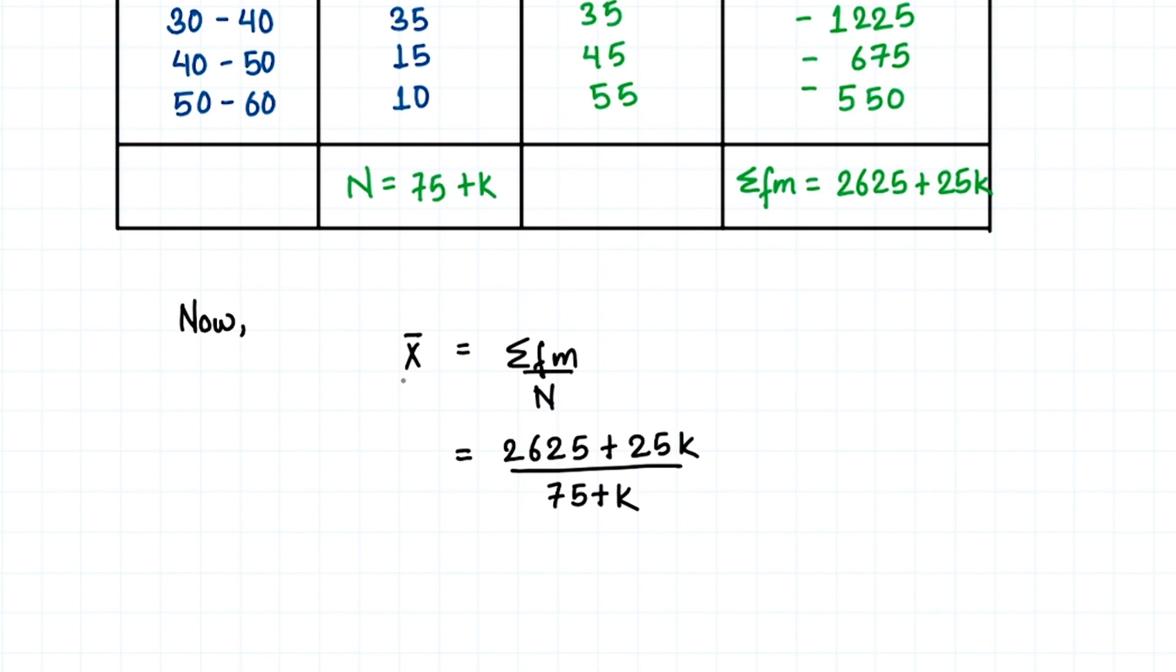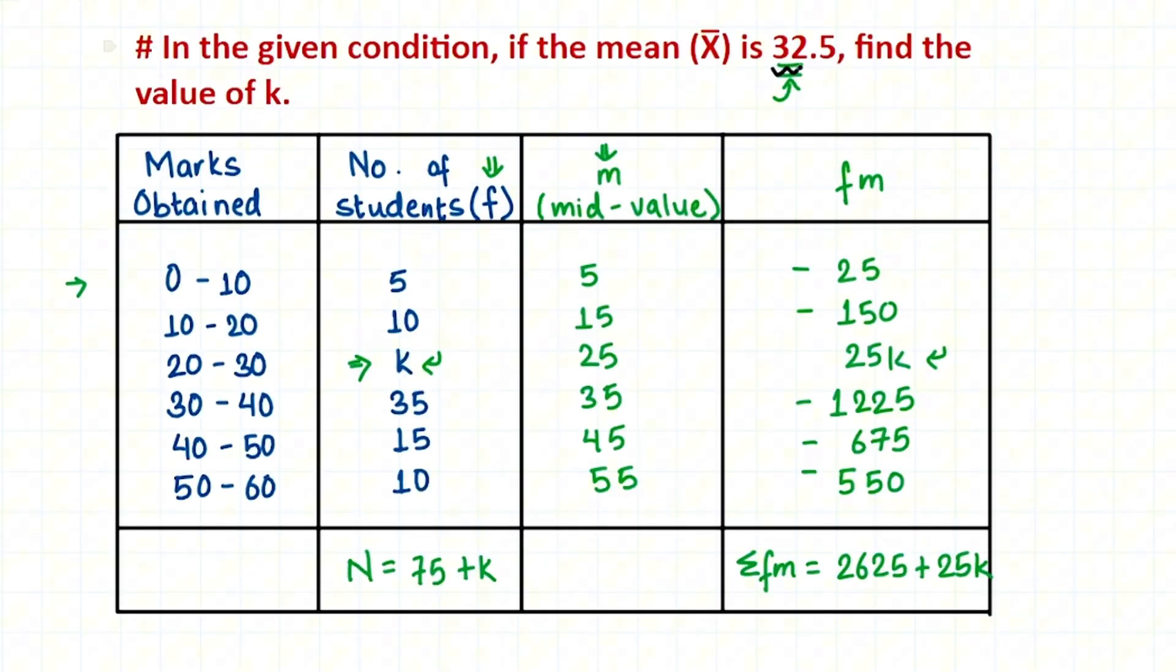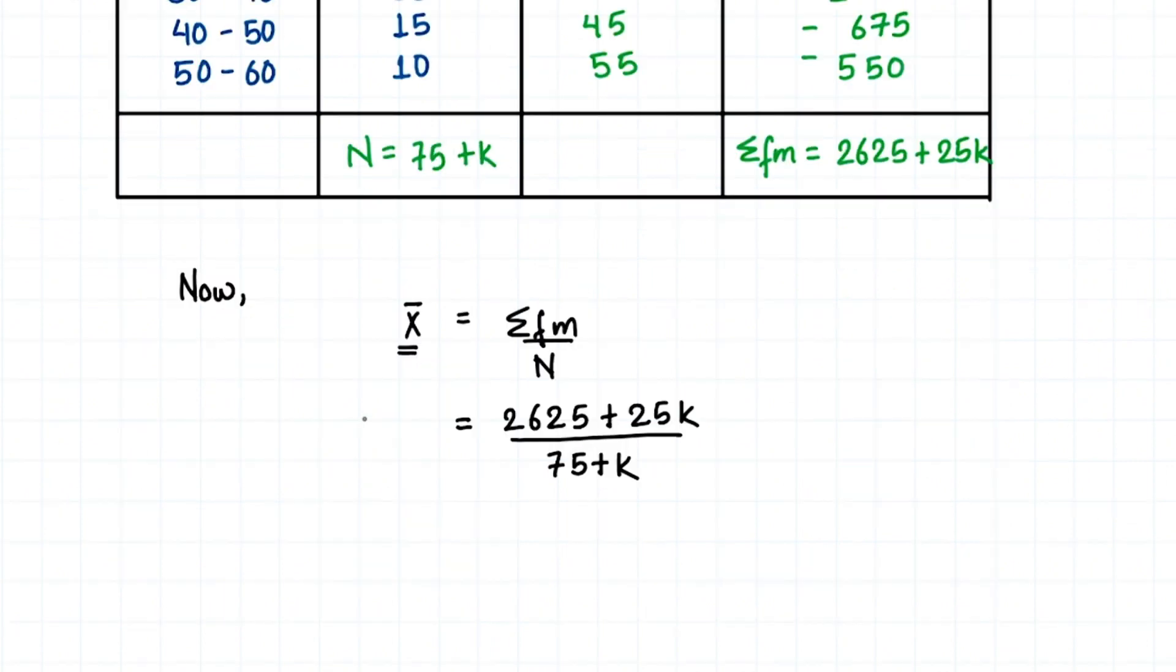The mean is given in our question as 32.5, so we can substitute that value. We have 32.5 equals 2625 plus 25k divided by 75 plus k.